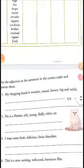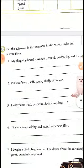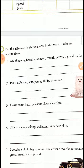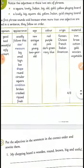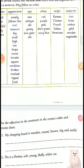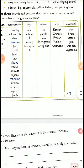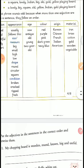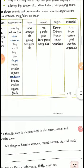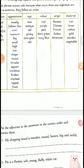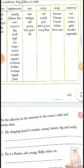Now, put the adjectives in sentences in correct order and rewrite them. First sentence: my chopping board is wooden, round, brown, big, and useful. Let's see the sequence: opinion comes first, so 'useful' is first, then size 'big', then shape 'round', then color 'brown', then material. So: my chopping board is useful, big, round, brown, wooden.